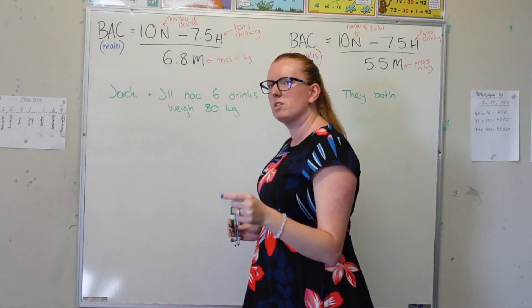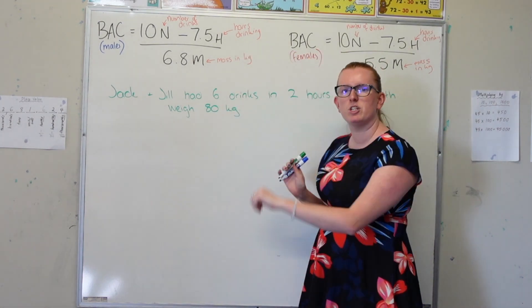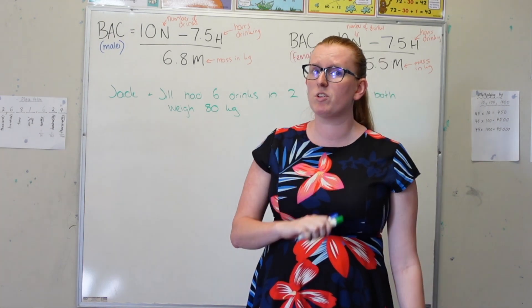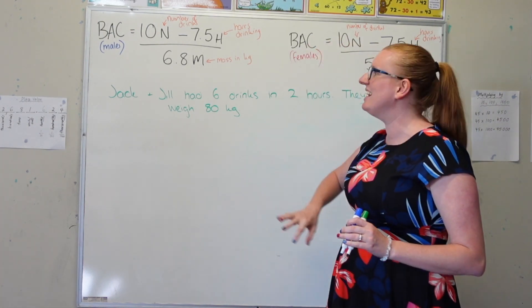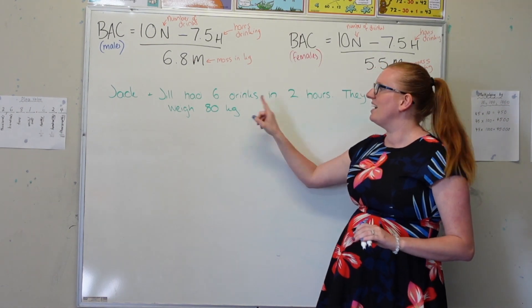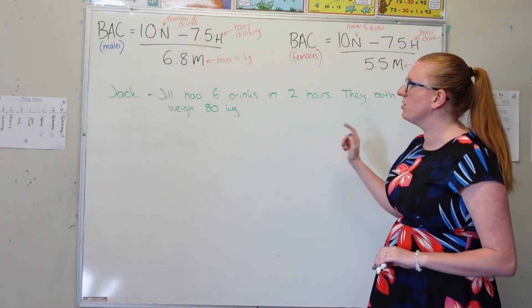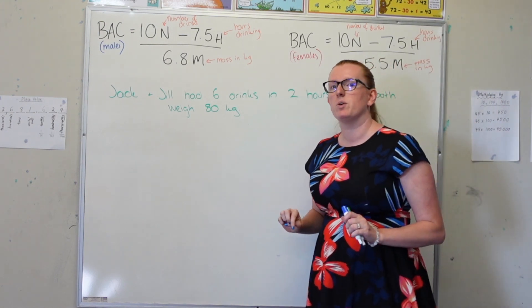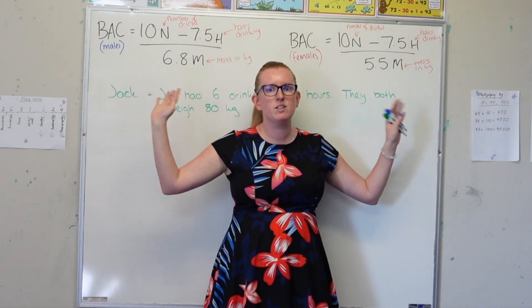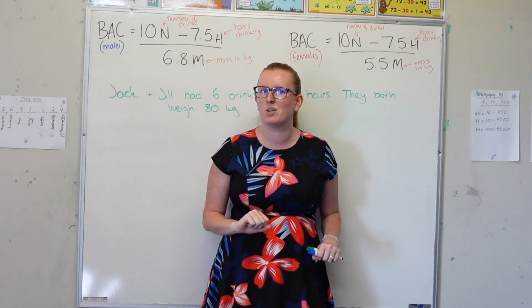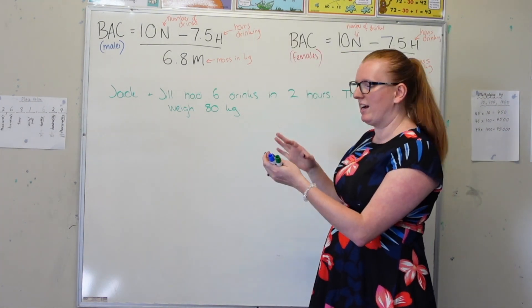So let's try and solve a question here. We've got Jack and Jill. They went up the hill and they had six drinks. We want to calculate their blood alcohol concentration. So they had six drinks in a space of two hours, and they both weigh 80 kilograms. So we're going to use these two formulas here to calculate Jack and Jill's blood alcohol concentration. Let's start with Jack.